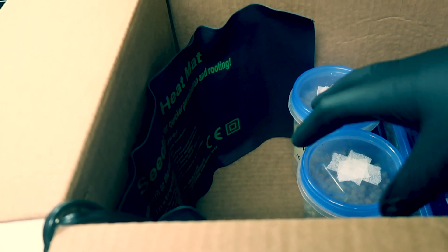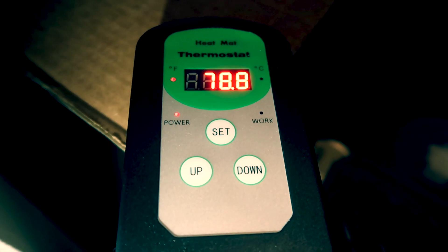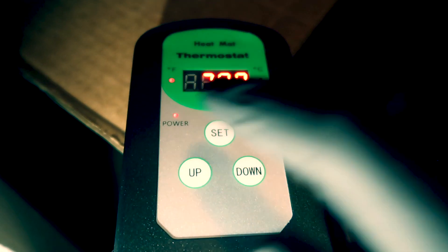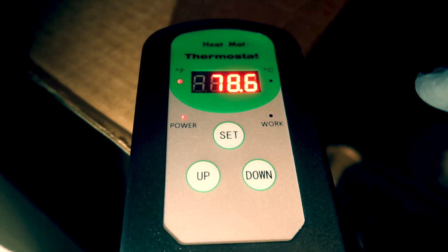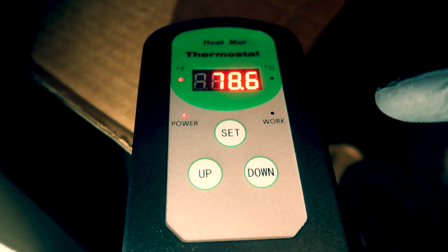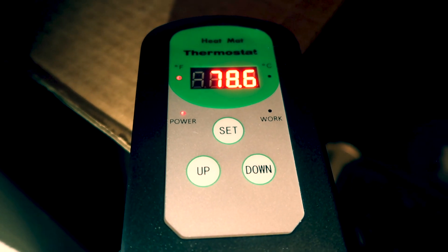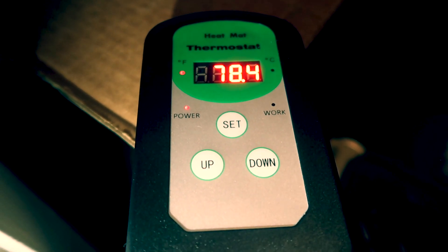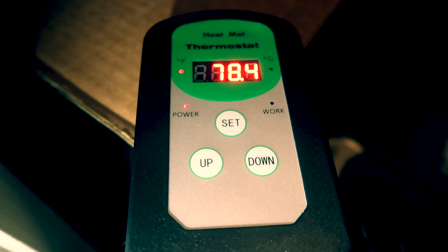Looking at the thermostat we can see it displays temperature in Fahrenheit as well as Celsius. And right now the current ambient temperature is 78.6 degrees Fahrenheit which is actually the perfect temperature for grain and substrate colonization, but that's only for right now. It's going to get colder.